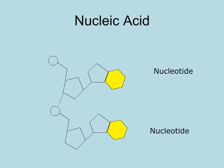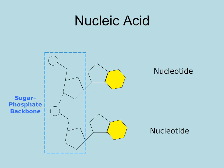And to form nucleic acids, we have to connect these monomers together. The bond that forms between the nucleotides is a covalent bond specifically called a phosphodiester bond. It occurs between the pentose sugar of one nucleotide and the phosphate of another nucleotide. The sugar and phosphate form the sugar-phosphate backbone of the nucleic acid.